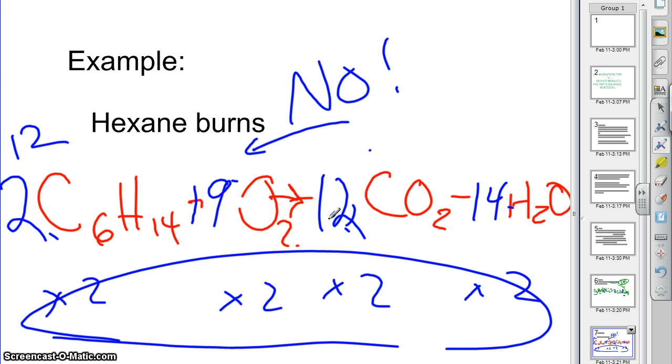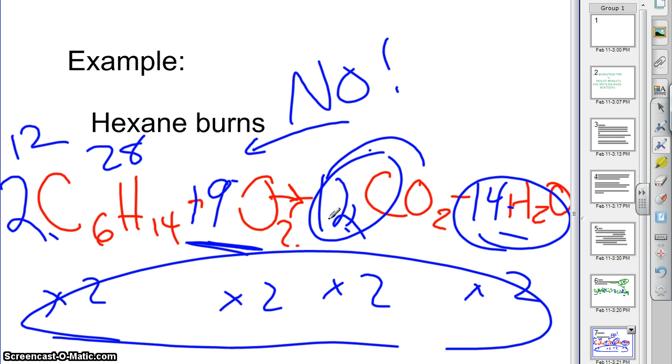We have 12 carbons here, 28 hydrogens. Here we have 12 carbons and 28 hydrogens, 14 times 2. And here we have 38 oxygens, and here we have 24 plus 14 is 38 oxygens. And so that is how you would balance that. Now, I've kind of made a mess now, but the final answer is 2 C6H14 plus 19 O2 arrow 12 CO2 plus 14 H2O.